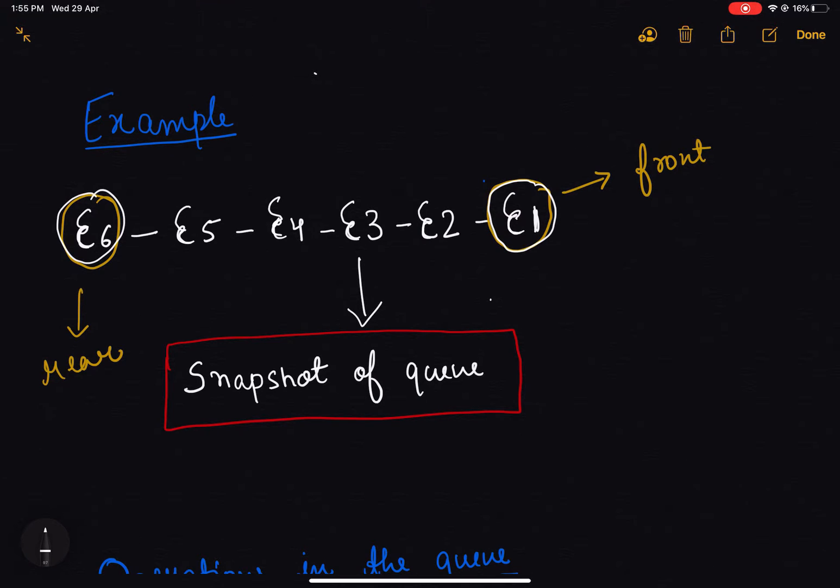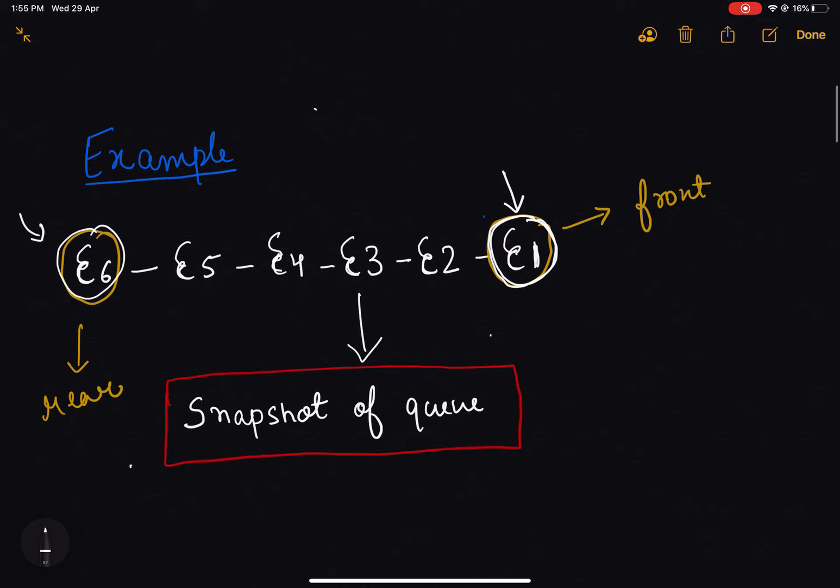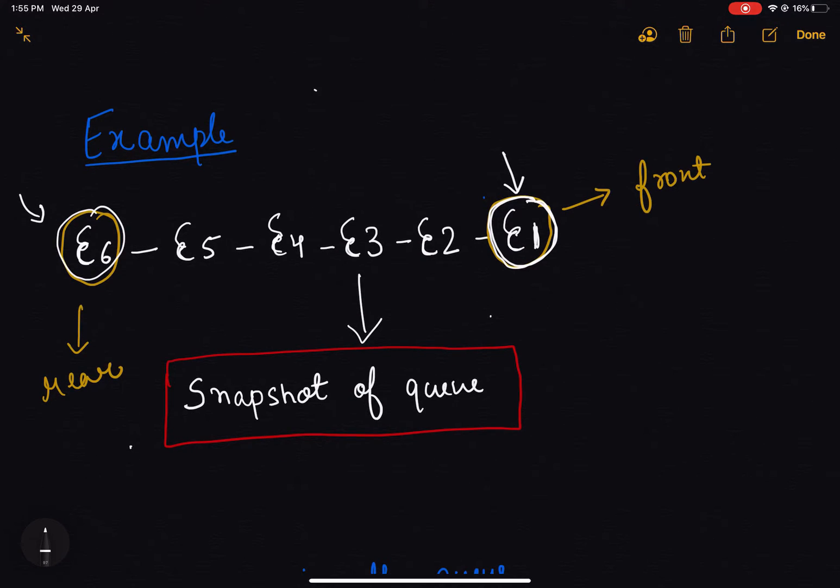As we can see here, if we want to make an insertion it should happen at the end of the queue, which we call the rear or tail of the queue. Likewise, deletion should happen from the start of the queue, which we call the front. If I want to delete some element, it should be E6 because this element entered first. If I want to insert some element, it should insert here.